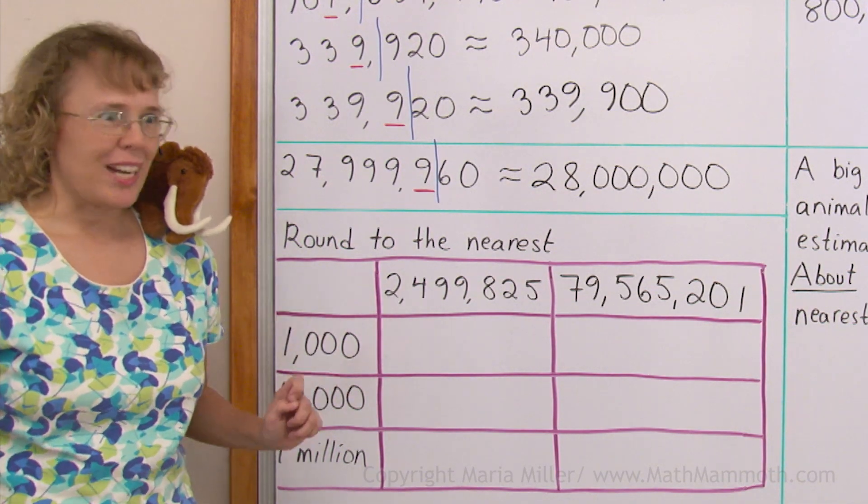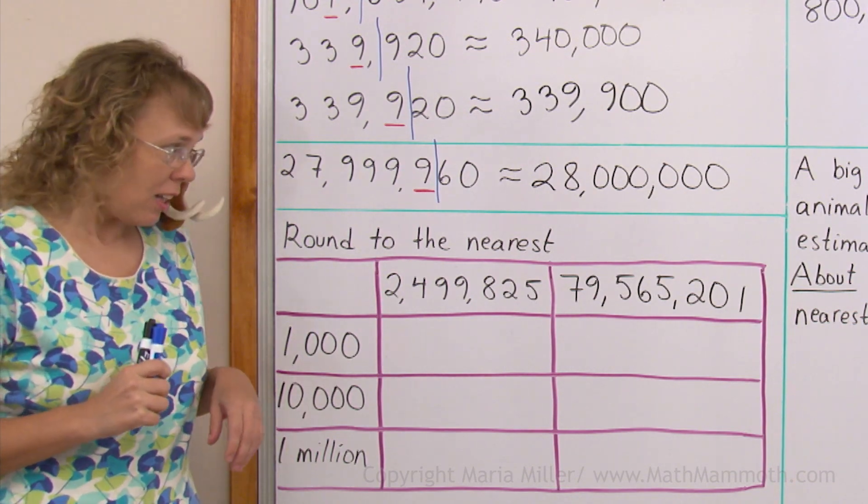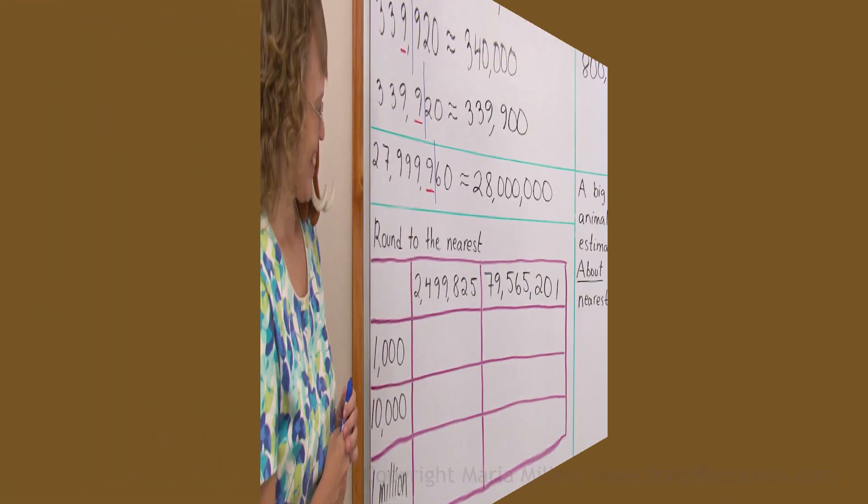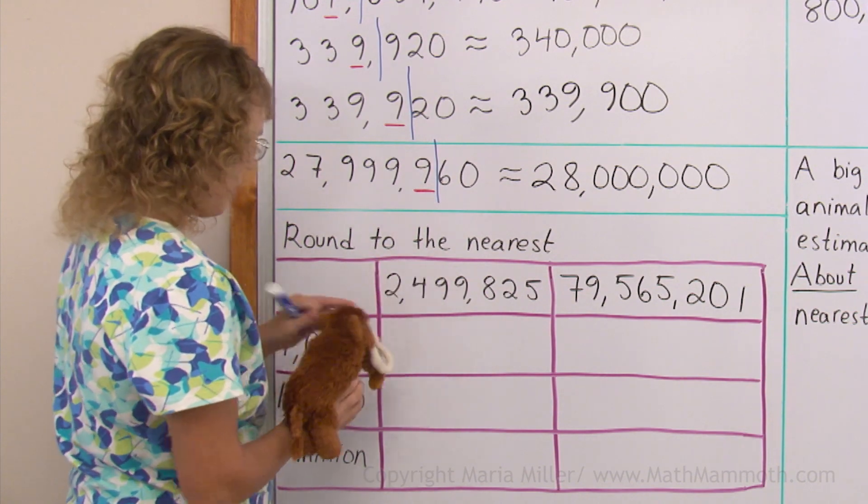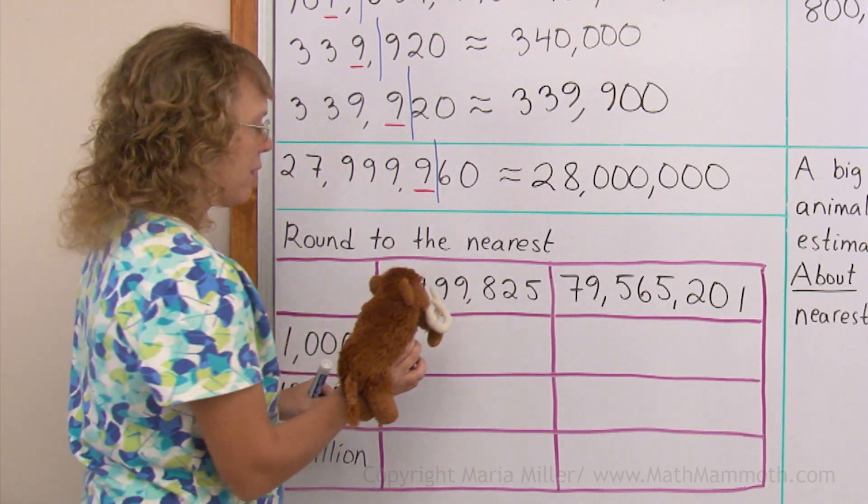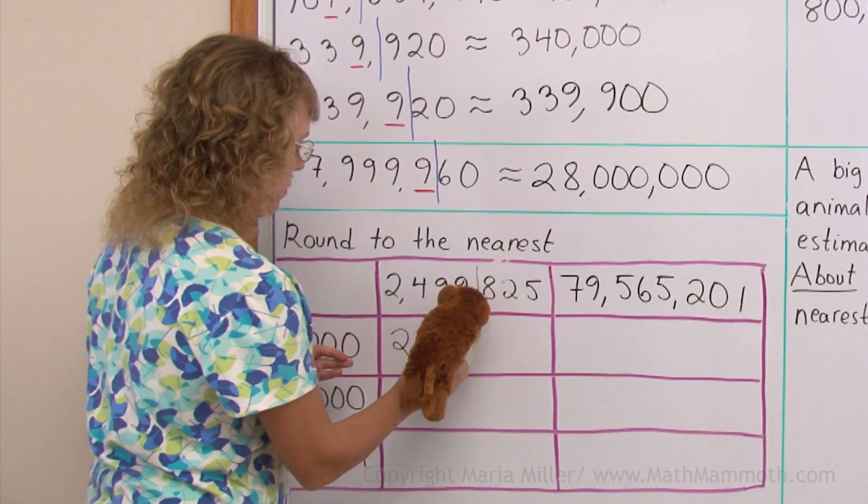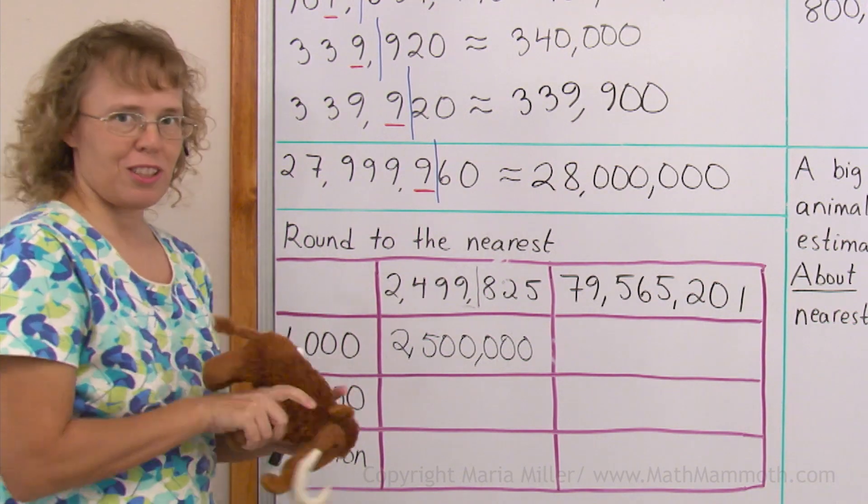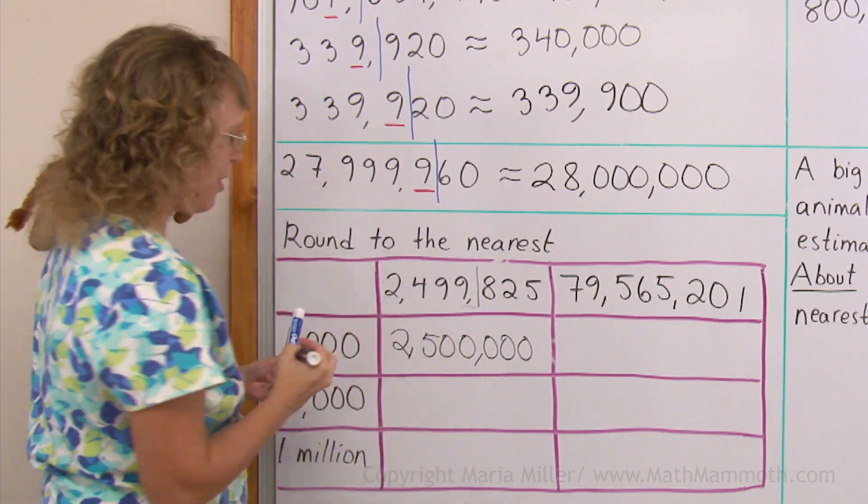Now here's some more rounding practice. And I want you to try to do it yourself, before I write it down. Before Matty writes the answers down, okay? Okay Matty, you can start working. Let's see what Matty gets. Rounding to the nearest thousand, we need to find the thousands place, which is here. Draw the cutoff line there. Matty, you're messing things up. I'm not gonna let you write the rest of this. Did you get the same? 2,500,000.